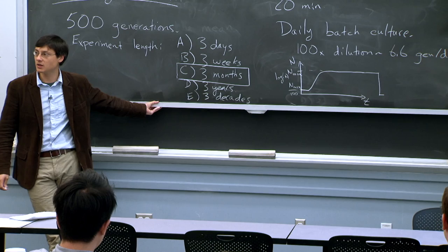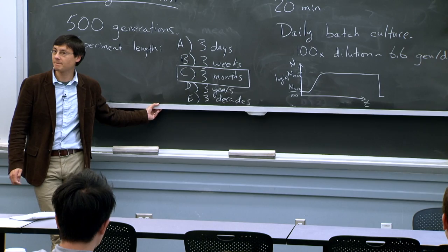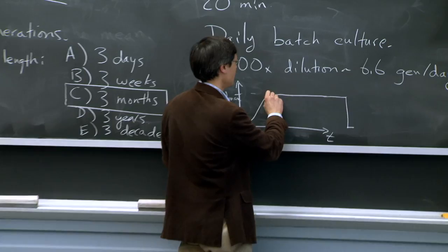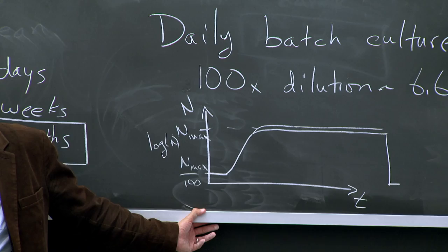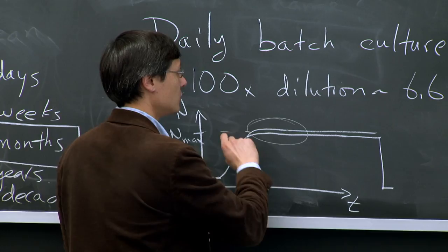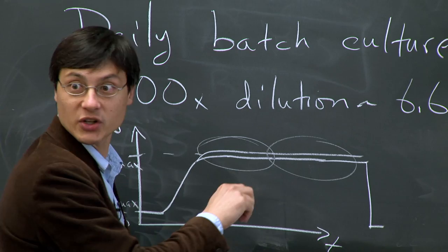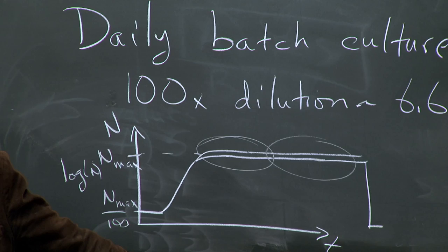In all discussions of laboratory evolution, we typically assume that what is being optimized is the growth rate — the rate of division. But you can imagine other things being optimized. For example, if you could eke out one more division during stationary phase, you'd get an advantage. There are growth advantage at stationary phase (GASP) mutants where the focus is on doing well during the stationary period.